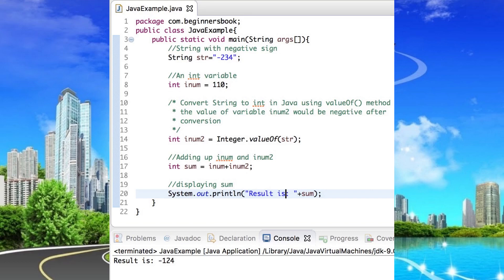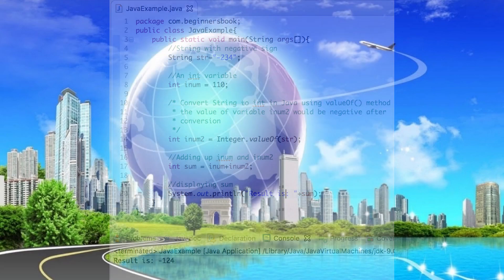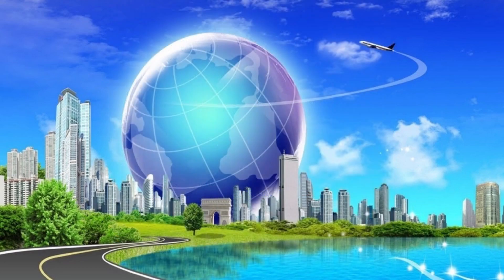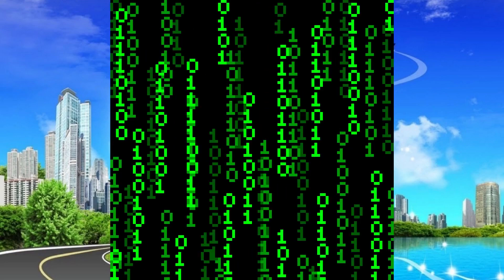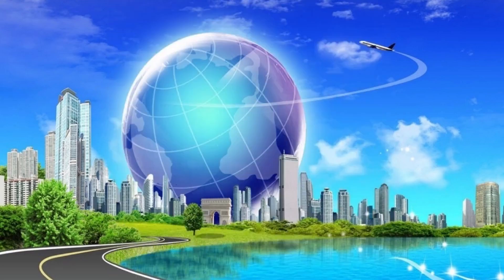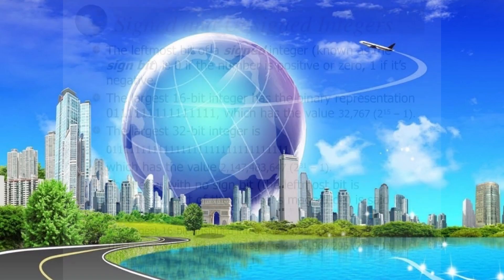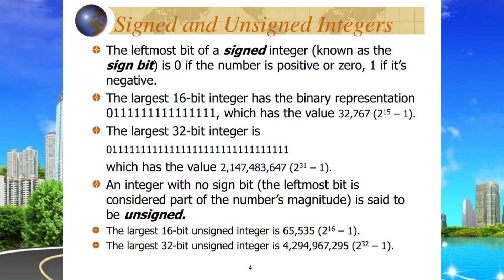So I assume you know binary numbers to some degree — like ones and zeros. Integers can be signed or unsigned; depending on that, they can either hold a positive or a negative value.